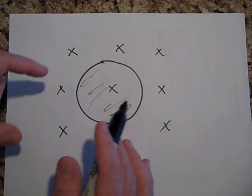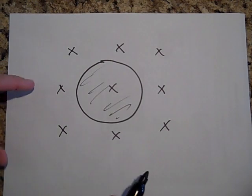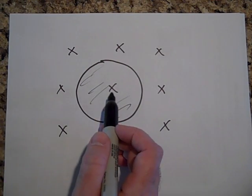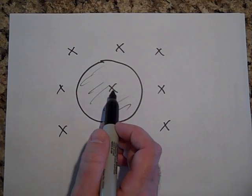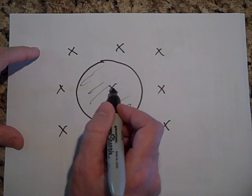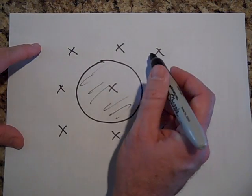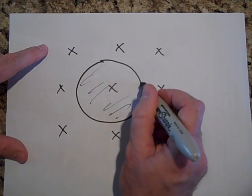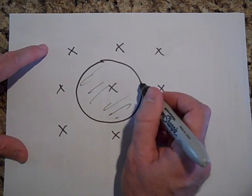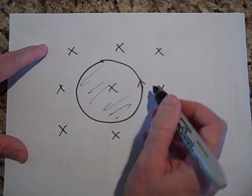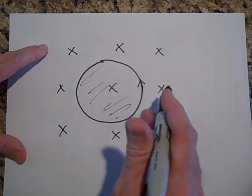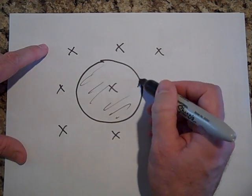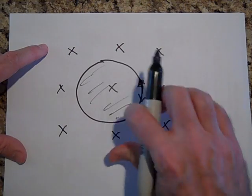Could you imagine if all of a sudden the x's started to grow — if the field into the page started to grow — then what would happen if the induced current was in such a direction as to make the current grow more, or the field to grow more?